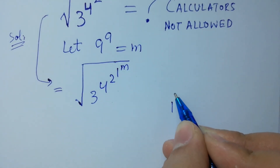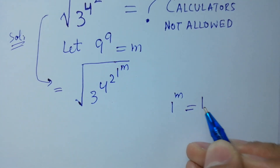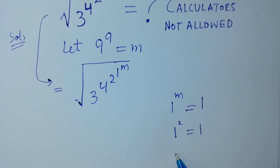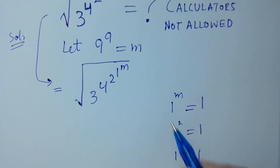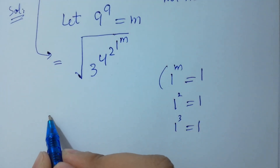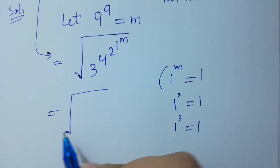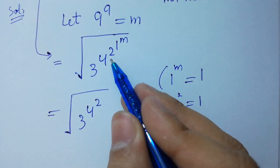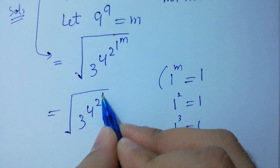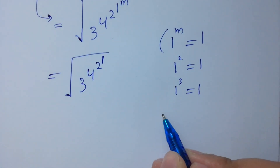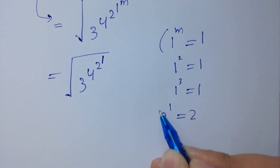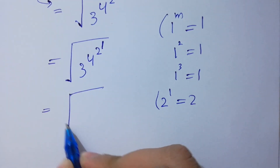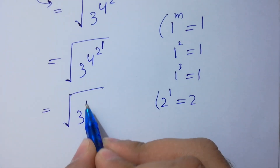Since 1 to the power m equals 1 — for example, 1 to the power 2 is 1, and 1 to the power 3 is 1 — we simplify: the expression becomes the scale root of 3 to the power 4 to the power 2 to the power 1, and 1 to the power 1 equals 1. So we have the square root of 3 to the power 4 to the power 2.